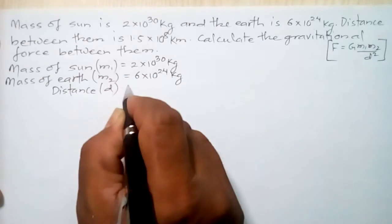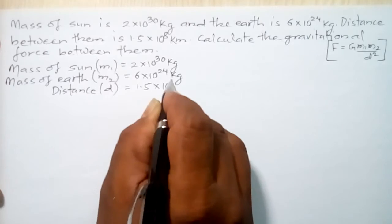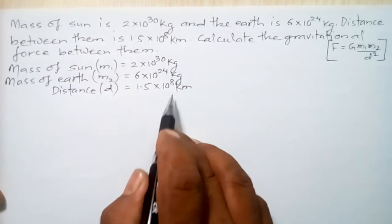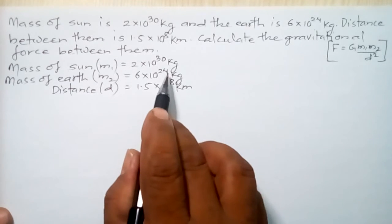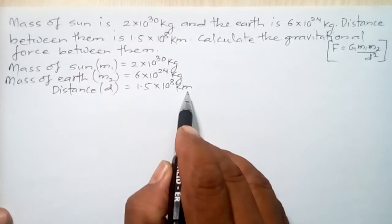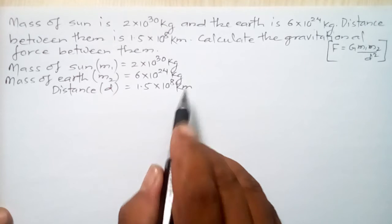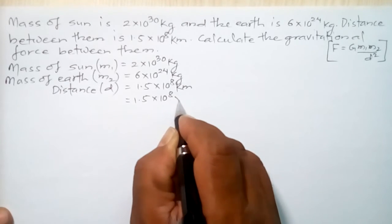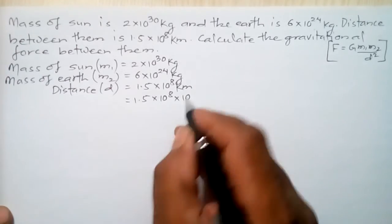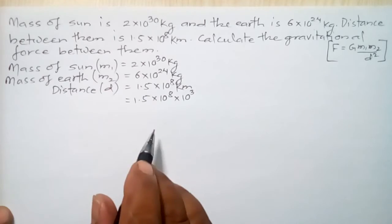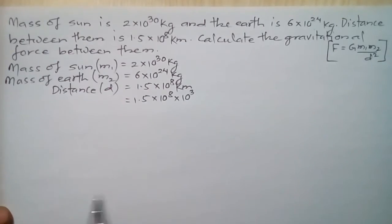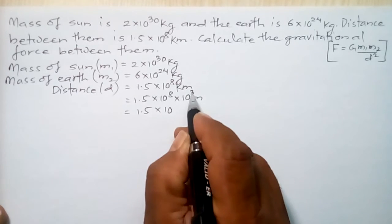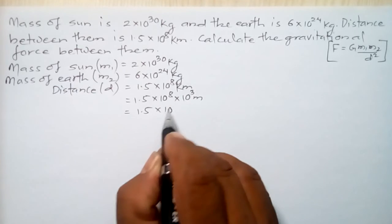The distance d is equal to 1.5 into 10 to the power 8 kilometers. We have to think about this unit — kilometer is not according to the SI system. The SI unit of length is meter, so we have to convert it. Multiplying by 1000, that is 10 to the power 3, gives 1.5 into 10 to the power 8 into 10 to the power 3. Since the bases are the same, powers are added: 8 plus 3 equals 11. So d equals 1.5 into 10 to the power 11 meters.